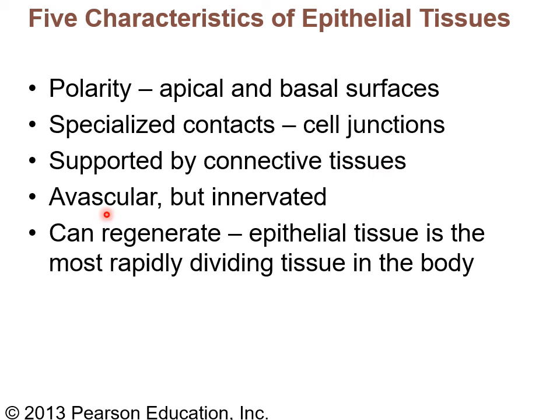Epithelium is avascular — it doesn't have a blood supply — but it does have a nerve supply, so it's avascular but innervated. It can regenerate; in fact, epithelial tissue is the most rapidly dividing tissue in the body. People on chemo recognize this because chemo targets rapidly dividing tissue, affecting not only cancer but also skin, hair growth, and the GI tract lining.